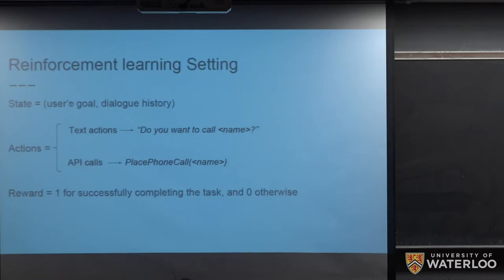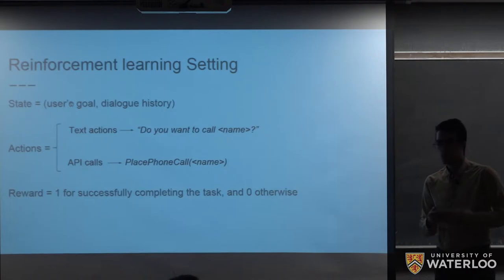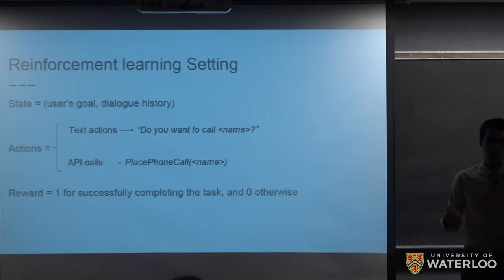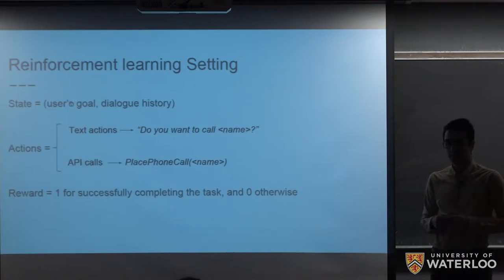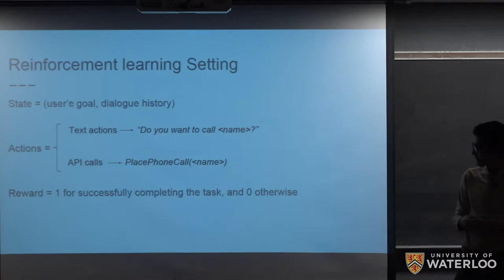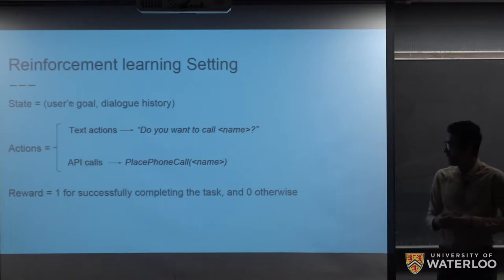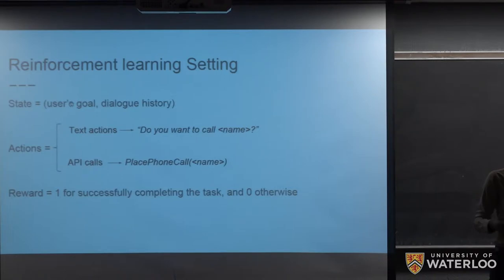We can cast this problem as a reinforcement learning problem in which the state is consisted of the user's goal and the dialogue history. User's goal in our example is, for instance, the name of the person and the type of the phone. And the dialogue history is, for example, whether a specific information is asked or confirmed or not. Actions could be either text actions, like do you want to call, followed by a name entity, or an API call, for example, to initiate a phone call to a specific name. Reward here is one if we successfully complete the task, and it is zero otherwise.